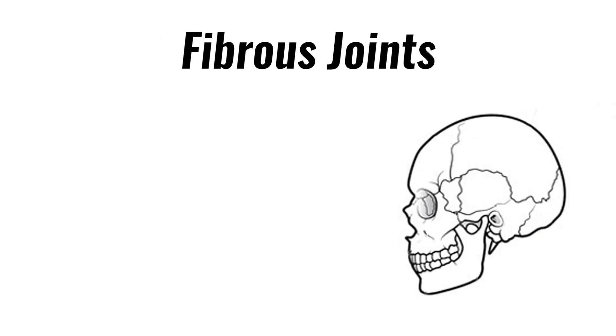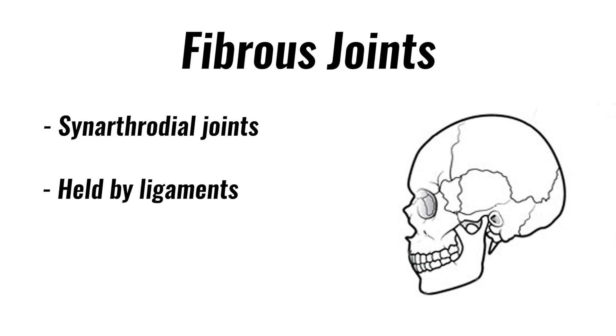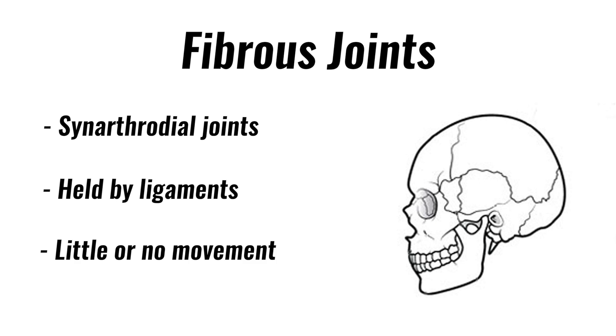Fibrous joints are also called synarthroidal joints. Bones are held together by a ligament only. As a result, they allow virtually no movement and are often referred to as immovable joints.